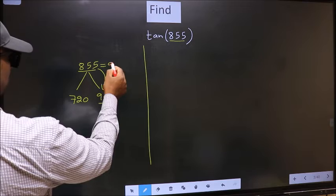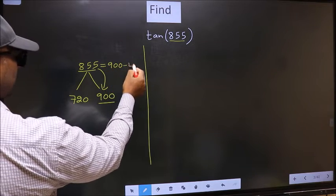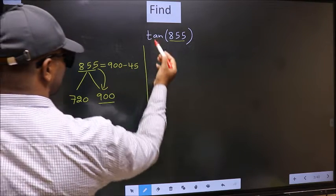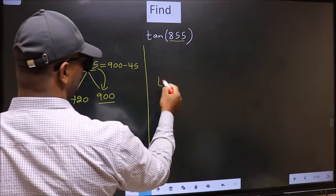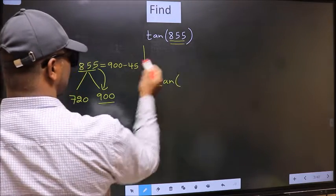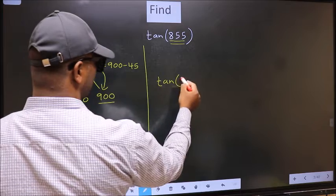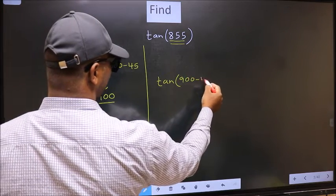So in place of this, now we should write 900 minus 45. So this will become tan, in place of this we write 900 minus 45.